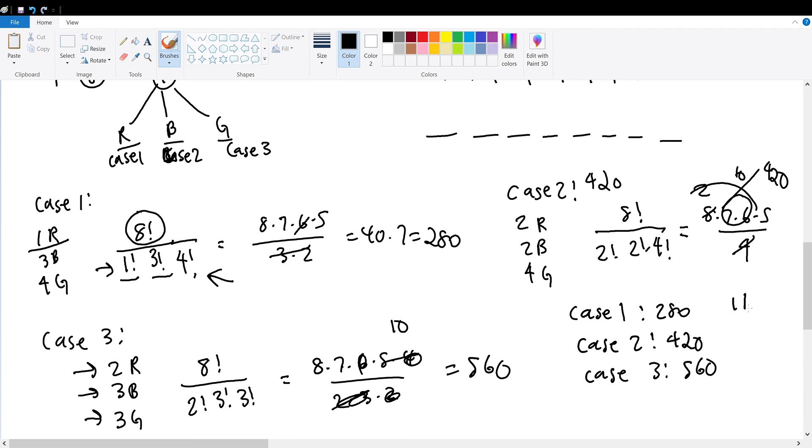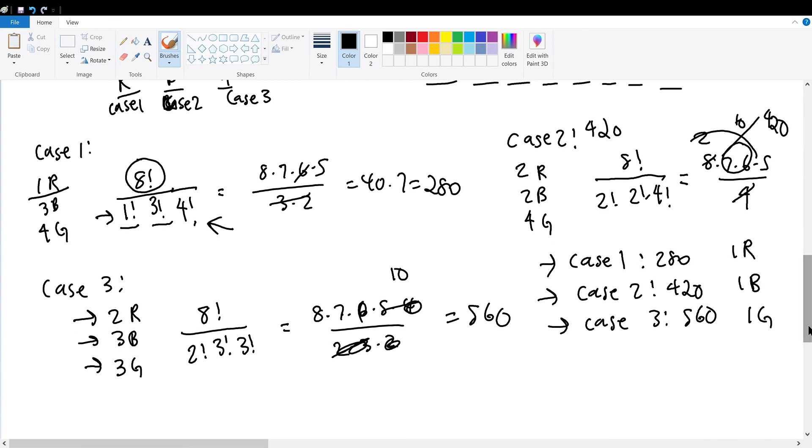Case 1 is when we remove 1 red, case 2 is 1 blue, and case 3 is 1 green cube. Since this is casework, we must sum each case. Why is this casework? Because the block we're removing might be any one of the three colors, but no matter what we remove, it contributes to the total number of possibilities. So we must sum them up.